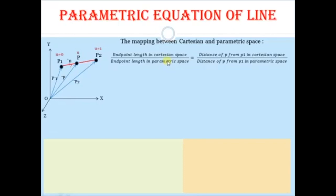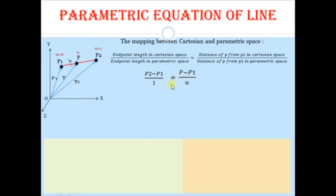To find the parametric equation, we map between Cartesian space and parametric space using the ratio: (P2 − P1) / (1 − 0) = (P − P1) / (u − 0). Simplifying, (P2 − P1) / 1 = (P − P1) / u. Rearranging to solve for P, we get P = P1 + u(P2 − P1), where u is between 0 and 1. This is the parametric equation of the line.